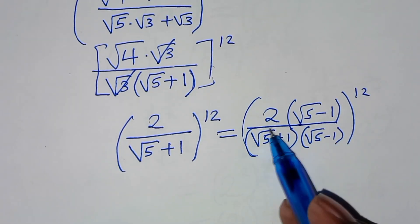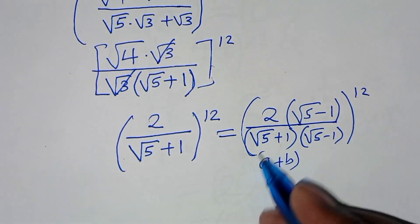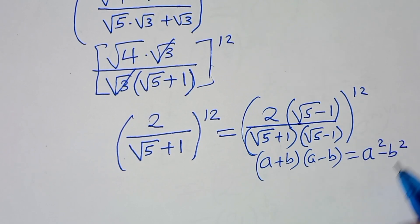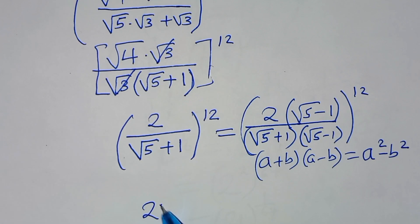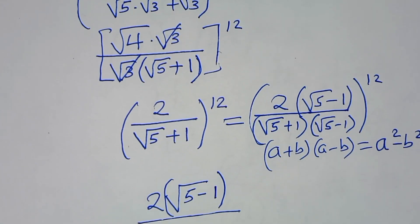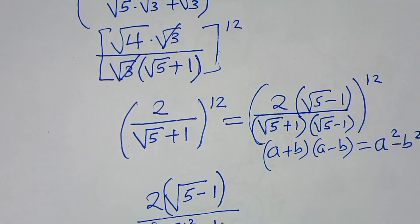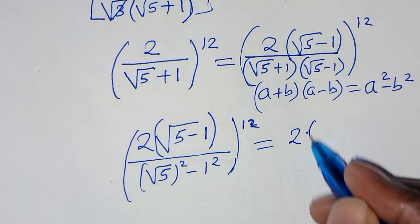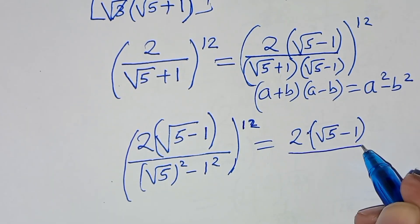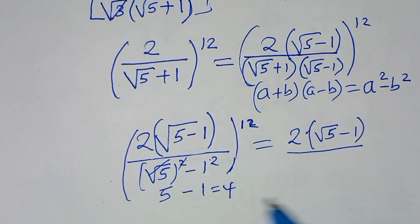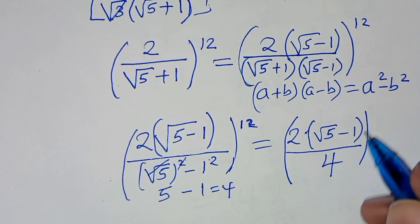Square root of 5 plus 1 is in the form of a plus b, and the conjugate gives a minus b, which transforms as a squared minus b squared. Applying this property, we have in the numerator 2 multiplied by square root of 5 subtract 1, divided by square root of 5 squared subtract 1 squared, raised to power 12. This simplifies to: square root of 5 squared is 5, subtract 1 squared is 1, giving 5 minus 1 equals 4.